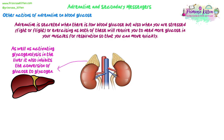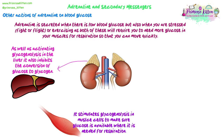Adrenaline does not demonstrate negative feedback — it is either in the bloodstream or it is not, so it has its effect while present and stops when gone. While adrenaline is in the system, glycogenolysis is triggered and the conversion of glucose to glycogen is stopped. When adrenaline drops away and blood glucose returns to normal or goes too high, the conversion of glucose to glycogen will restart. Adrenaline also stimulates glycogenolysis in muscle cells, which also have a glycogen store that can be broken down to release glucose for respiration.